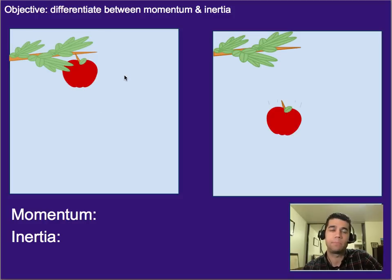Let's look at one last example to help differentiate between them. We've got an apple that's sitting still and then begins to fall. We can look at what happens to its momentum and inertia as it goes from sitting still, hanging on a branch, to falling and beginning to move.